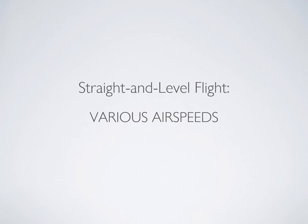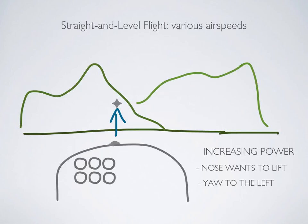Now that you know how to fly straight and level, let's talk about flying straight and level at various airspeeds. Due to force coupling, when power is added in straight and level flight, two things are going to happen: the nose is going to lift, and the aircraft is going to want to yaw to the left. To counter these forces, if you want to fly straight and level at a higher airspeed or higher power setting, you're going to have to simultaneously push forward on the yoke and apply a slight right rudder while you add power.